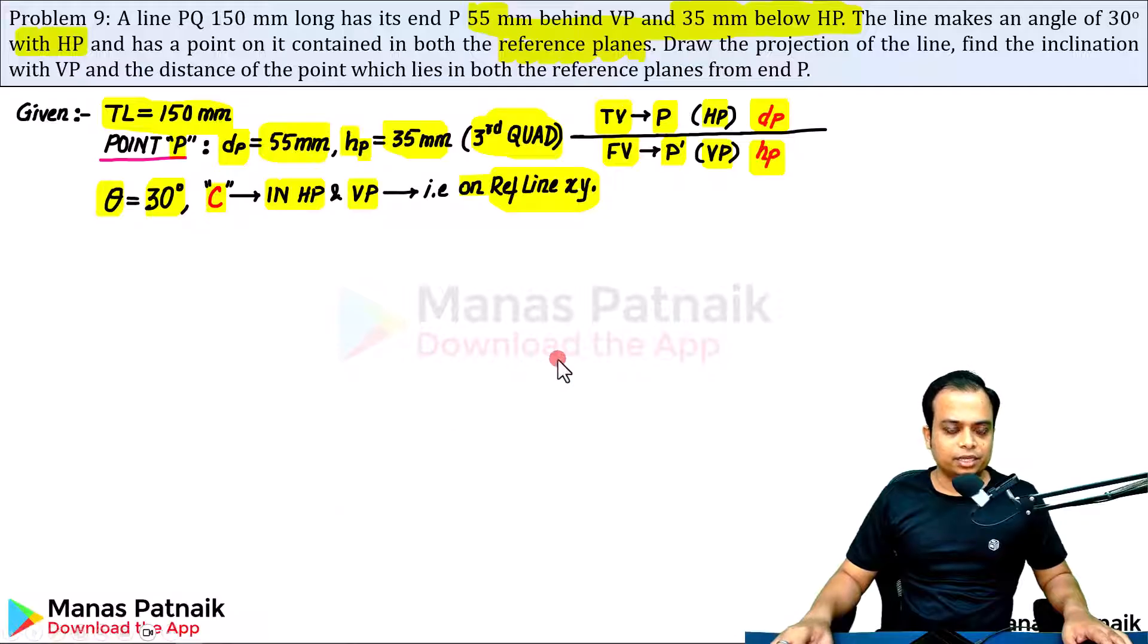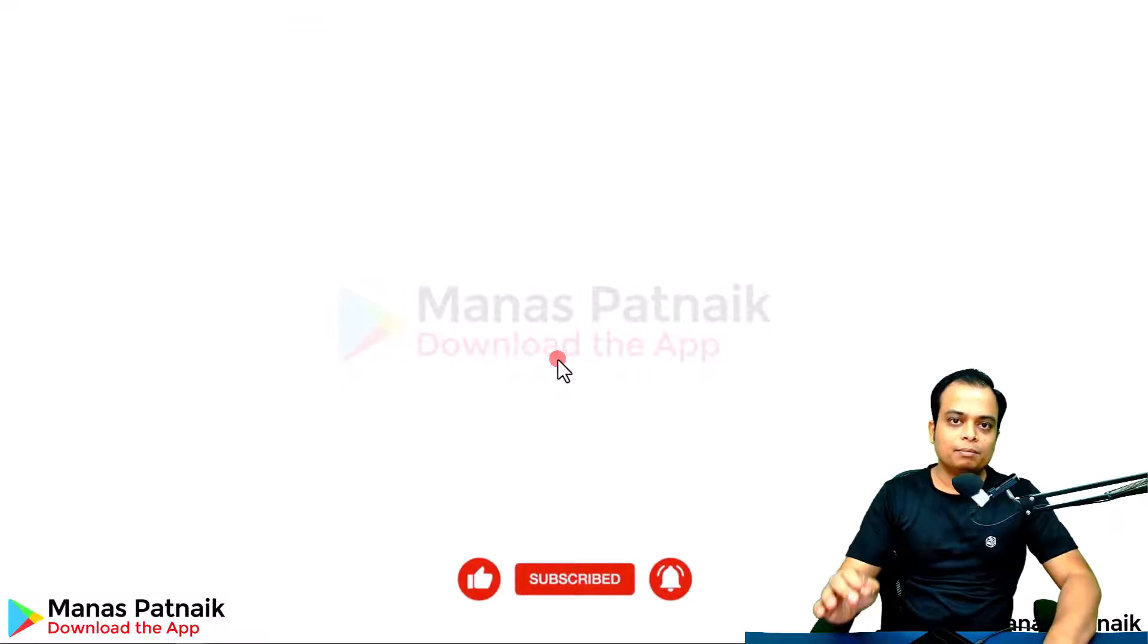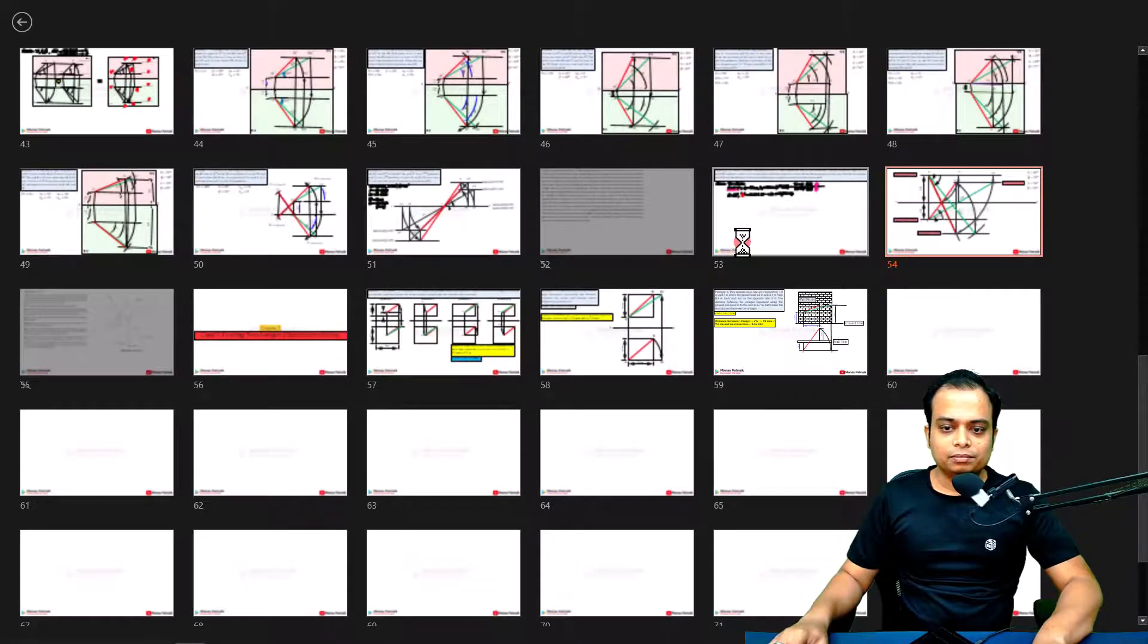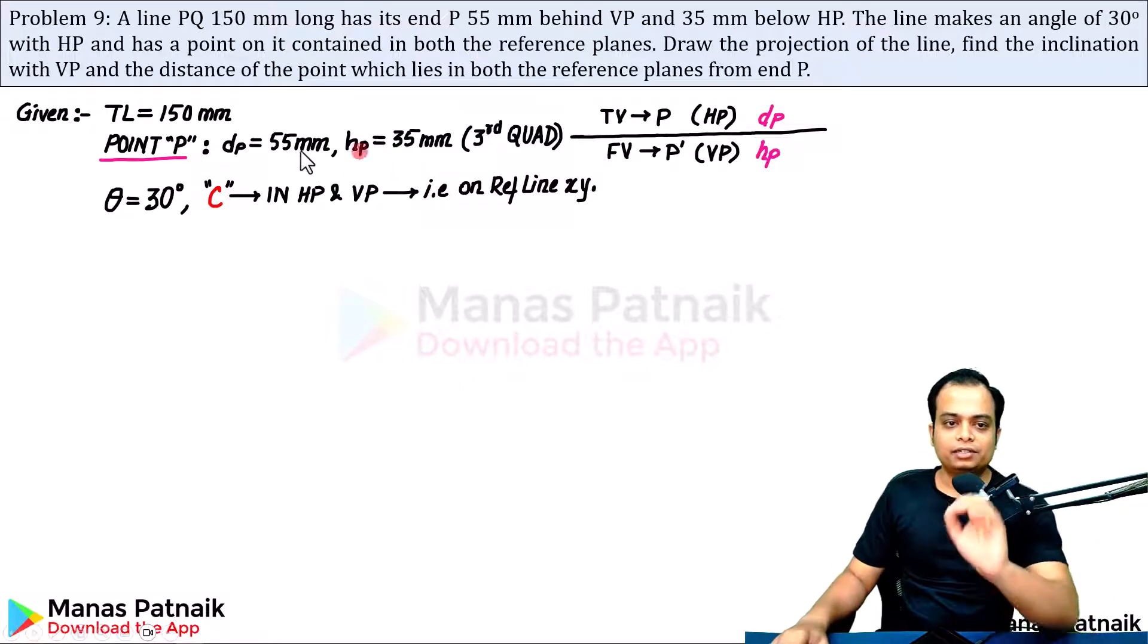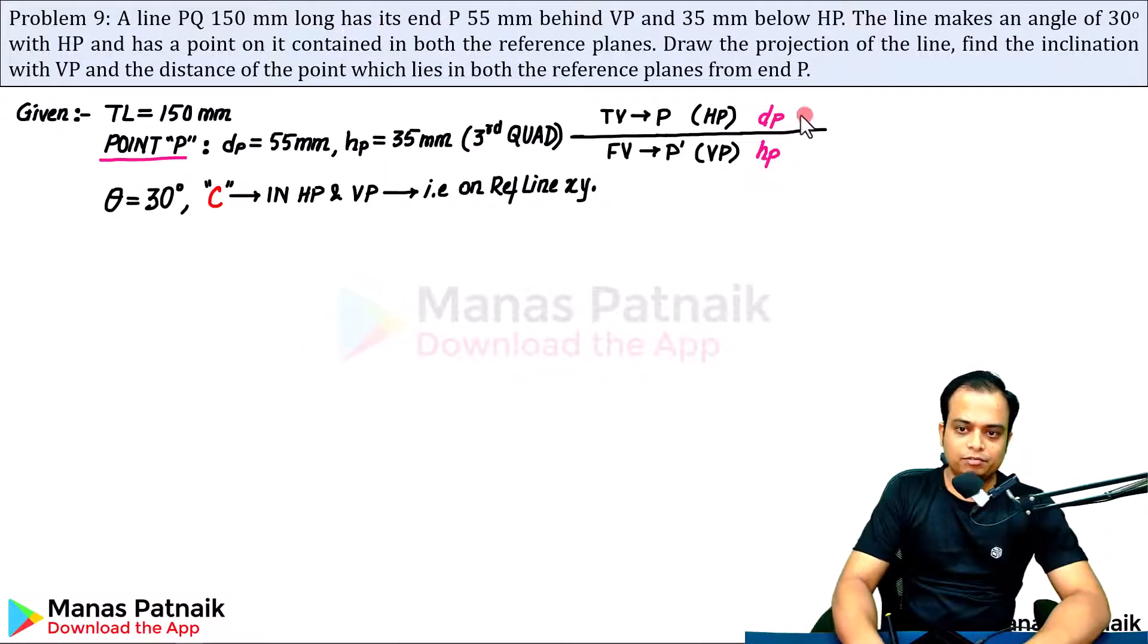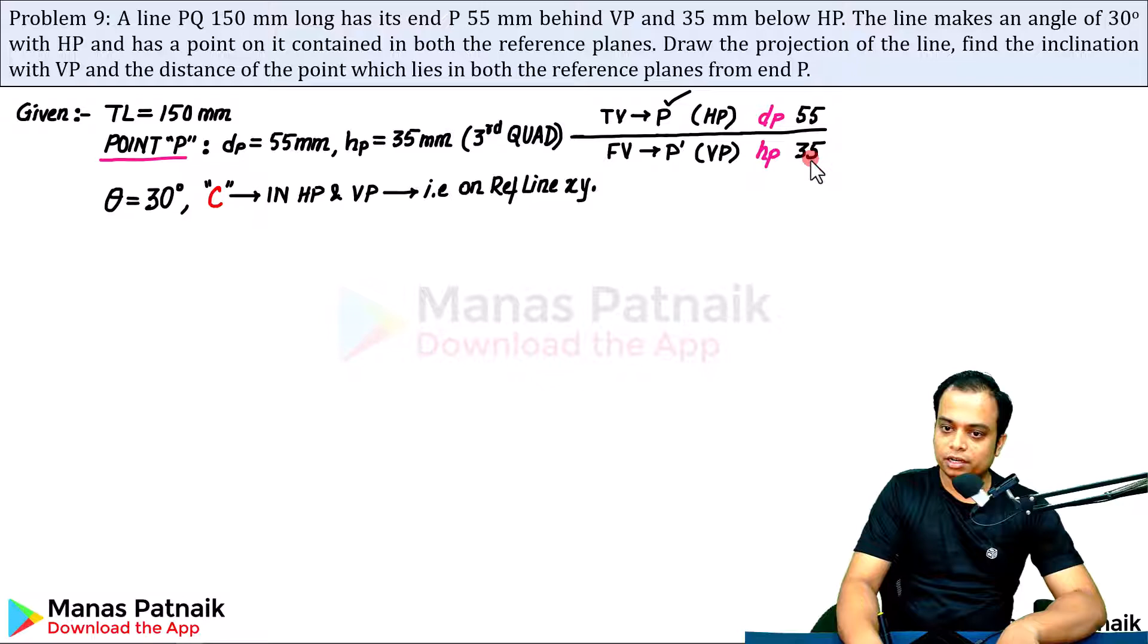Let's start this presentation. We start by making an XY line. We know that the location of point P is 55 and 35. Since it is in the third quadrant, DP is going to be above, HP is going to be below. DP has been given as 55. This is going to be 55, and this is going to be 35. 55 millimeters from the reference line upwards will get you to point P or the top view. 35 mm below the XY line will get to you the front view that is P dash.